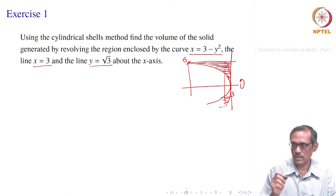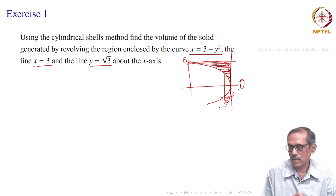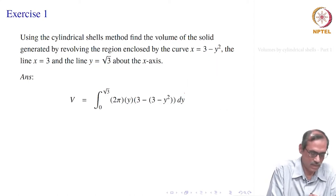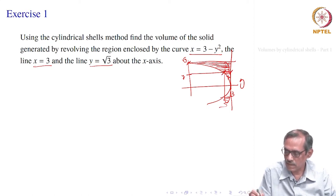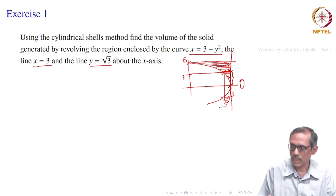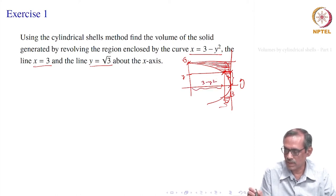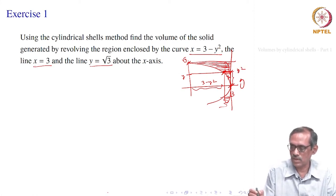What is the cell radius and what is the cell height? You take any point revolving around the x-axis, so we start by taking y. That gives this distance as the cell height. The cell radius is the distance from the axis, so cell radius is y. The cell height is 3 − y², and the total distance is 3, so the particular distance which is the cell height is y².